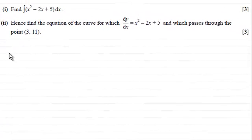Hi there. Now in this question, we're asked to first of all find the integral of x squared minus 2x plus 5 with respect to x, and then go on and hence find the equation of the curve for which dy dx equals x squared minus 2x plus 5, and which passes through the point 3, 11.